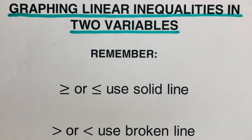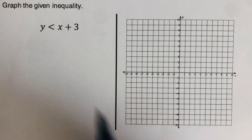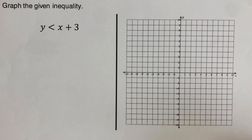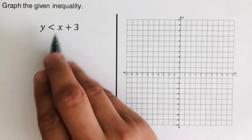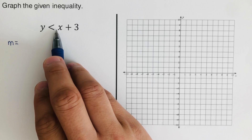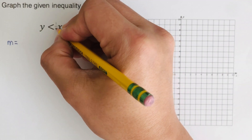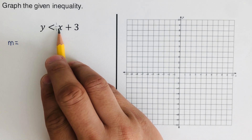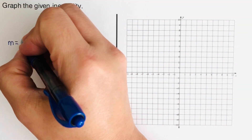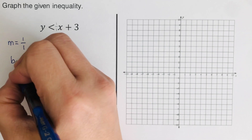Let's look at an example. We are supposed to graph this inequality, which is read as y is less than x plus 3. First, we determine the slope. Our m is the fraction in front of x. Since there is no number in front, there is an invisible 1 over 1, so the slope is 1 over 1. The y-intercept b is 3.